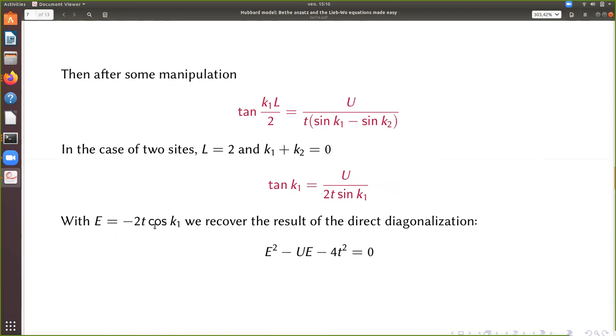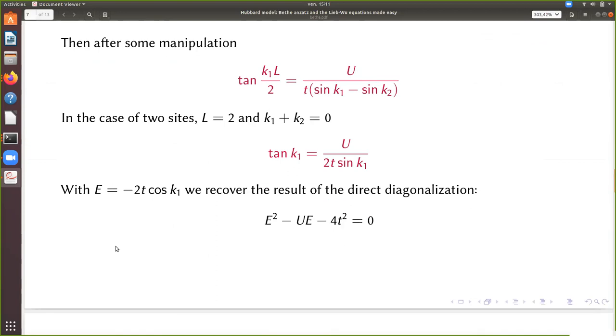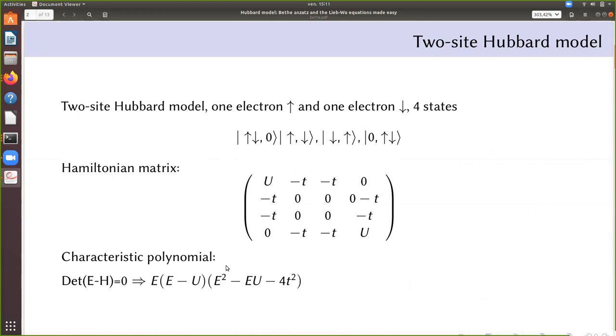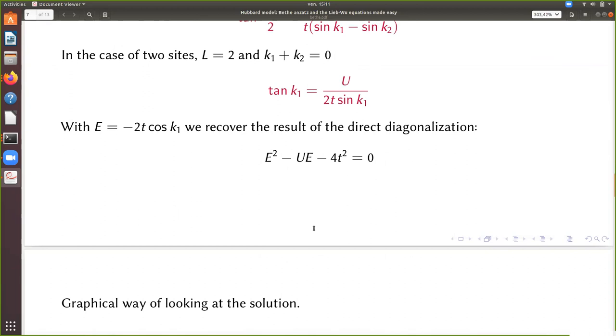So if I take the case of the two sides, you have two sites. So L equal 2. So you make tangent of k1 on the left. And here we take the lower solution, which is k1 plus k2 equals zero, which correspond to this solution of this equation. And you get this equation here. This equation gives you the value of k1, which gives you the energy. If you look at this equation and remind that the energy here is a sum of two cosinus, k1 equals minus k2. So it's the same cos. If I write the energy as minus 2t cos of k1, I get the equation for the energy, which of course is exactly the same equation as we got by direct diagonalization of the matrix here.